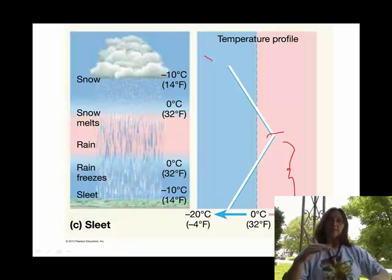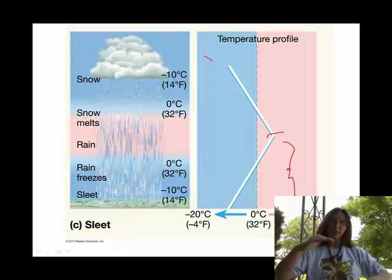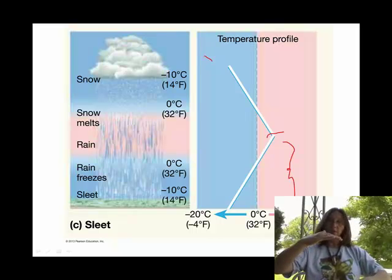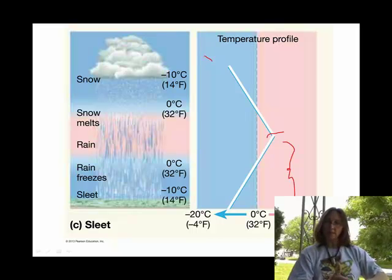This is sleet. If it has a fair bit of depth to the temperature inversion, then it has enough time to form those little ice pellets that we call sleet.